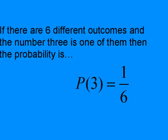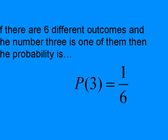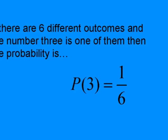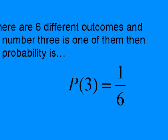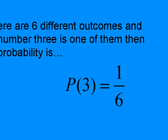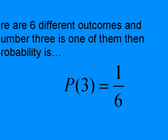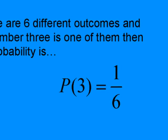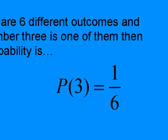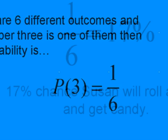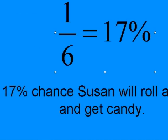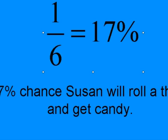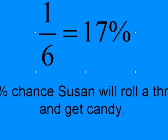She thinks to herself, if there are 6 different outcomes and the number 3 is one of them, the probability must be 1 out of 6. That means I have a 17% chance of getting candy, Susan tells herself.